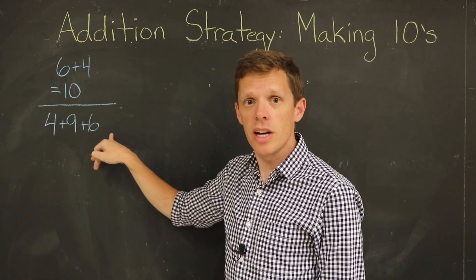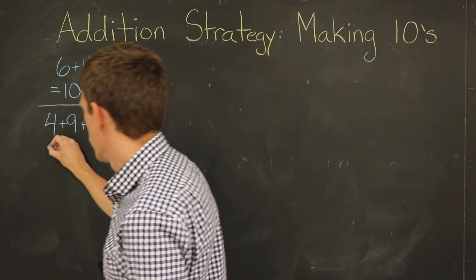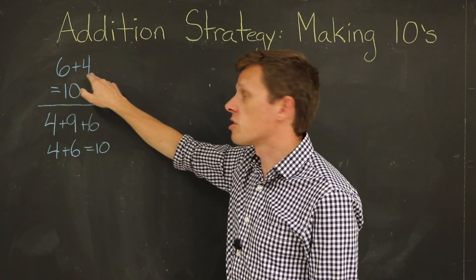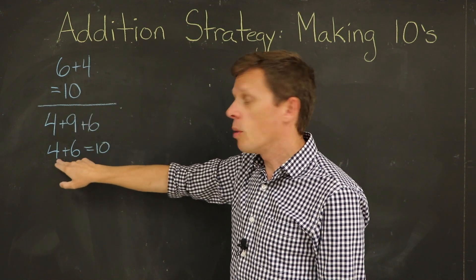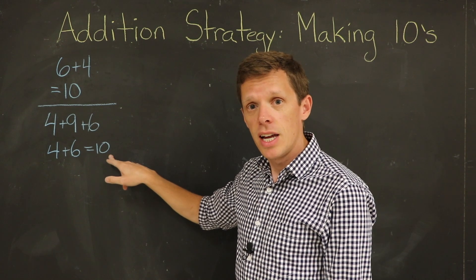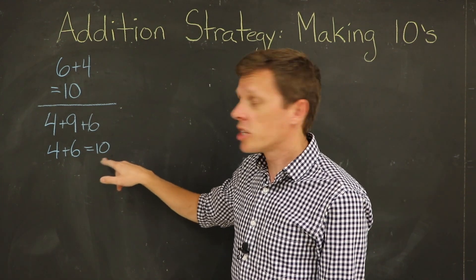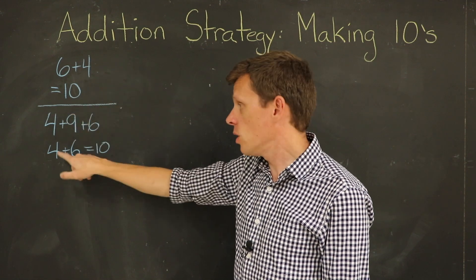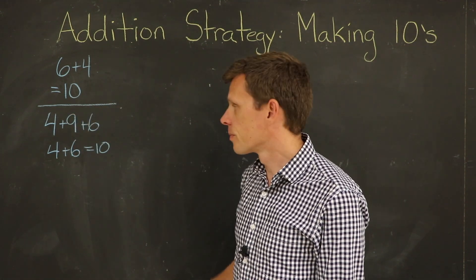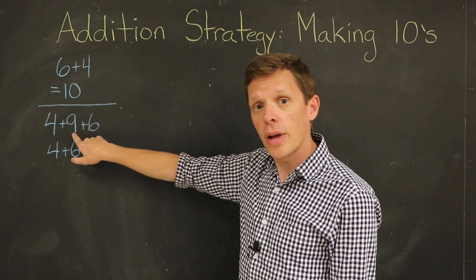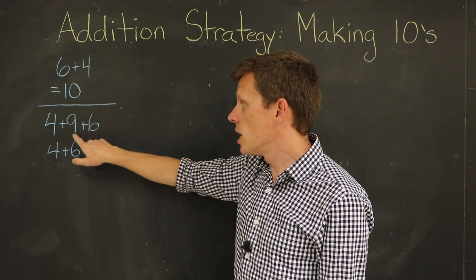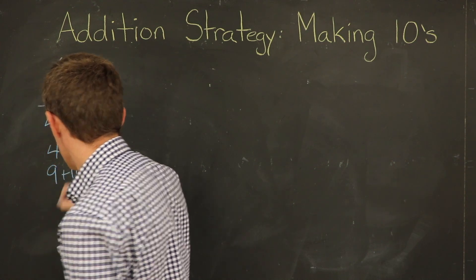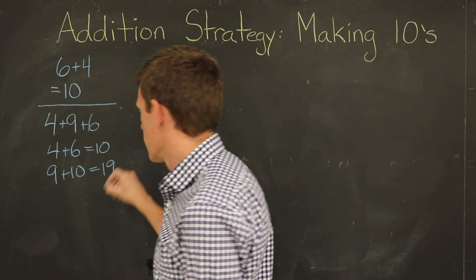So we can put those numbers together and make ten — four plus six equals ten. This is an important fact about addition: it doesn't matter what order we add our numbers in, we're always going to get the same sum. So six and four gives ten, and four and six still gives ten. Now that we have our ten, the only number we haven't added yet is nine. So we add nine and ten to get our final sum: nine plus ten equals nineteen.